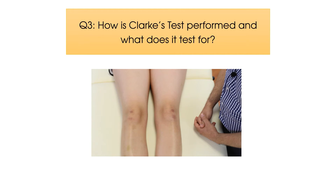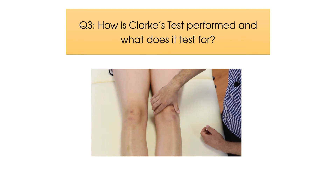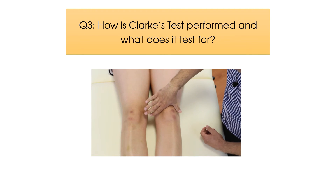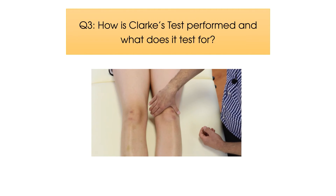As you can see in this video, to perform Clarke's test, the therapist places the webbing between the thumb and index finger just superior to the patella, in order to gently but firmly glide the patella in a caudad direction. The patient then performs a contraction of the quadriceps muscle whilst the therapist maintains their pressure.